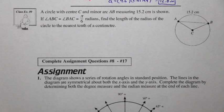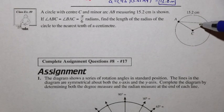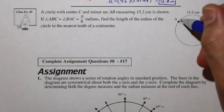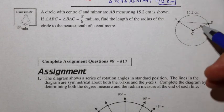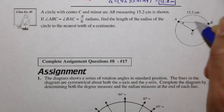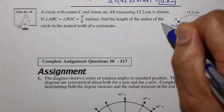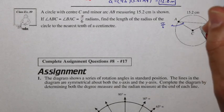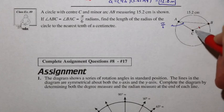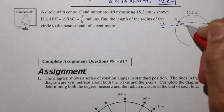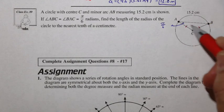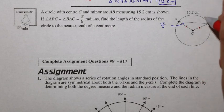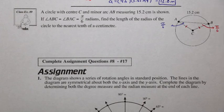Let's look at class example 9. We have a circle with a triangle inside. The minor arc is 15.2 and angle BAC, measured in radians, is pi over 6. Looking at the triangle more carefully, if this point is the center, then both sides of the triangle from the center to the edge are radii, making it an isosceles triangle. By the isosceles triangle theorem, both base angles are equal.